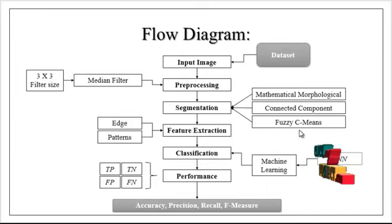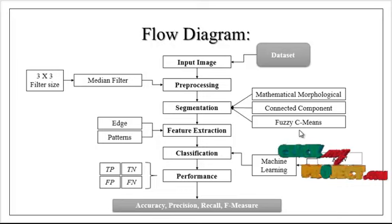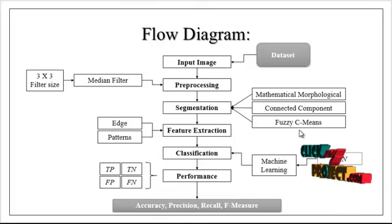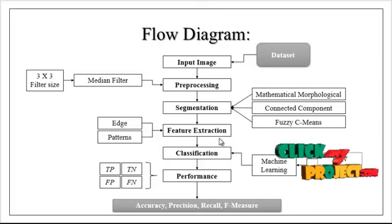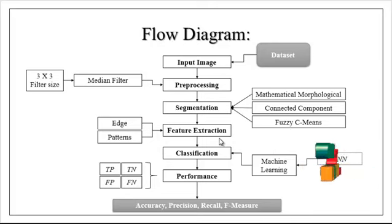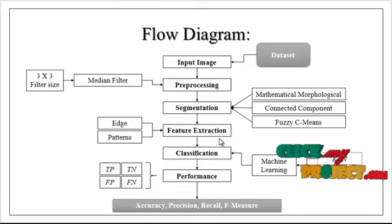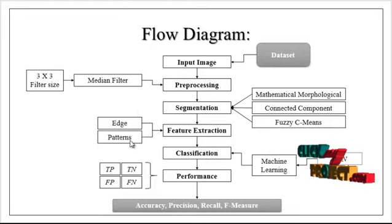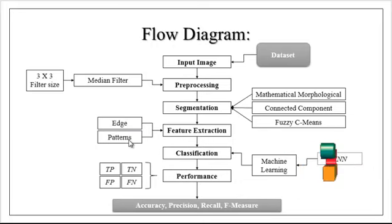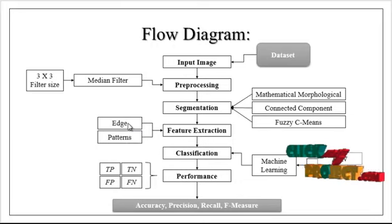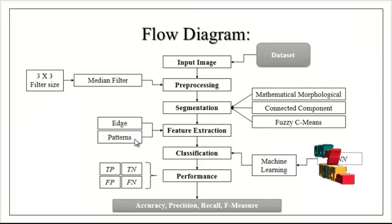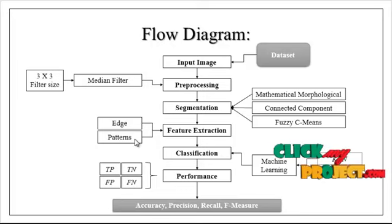Then, if needed, FACC means clustering is applied to remove unwanted regions and to extract the appropriate position. After segmentation, we extract features from the images by means of feature extraction methods. There are two kinds of feature extraction methods: one based on edge-based features and another based on pattern-based features. We extract both kinds of features from the images and then combine them together to generate the test feature.